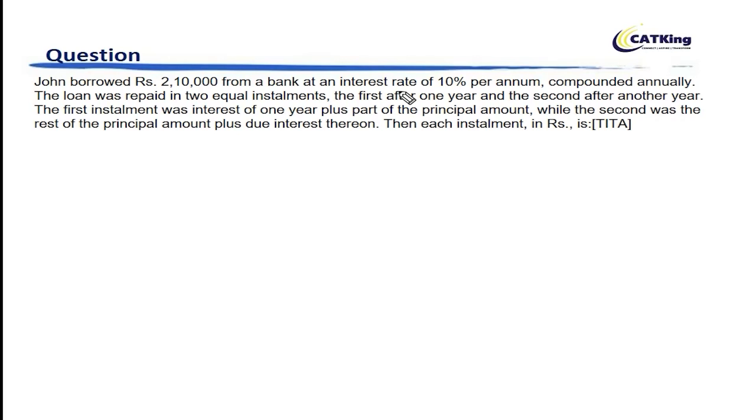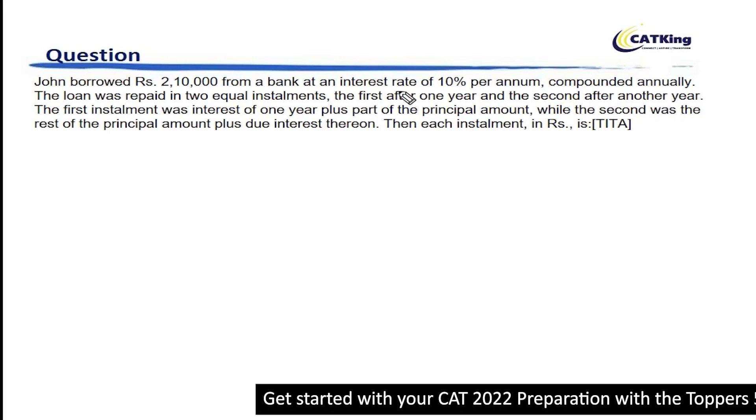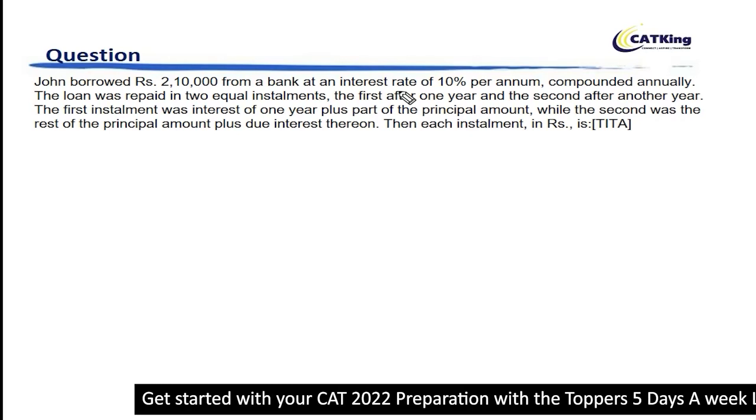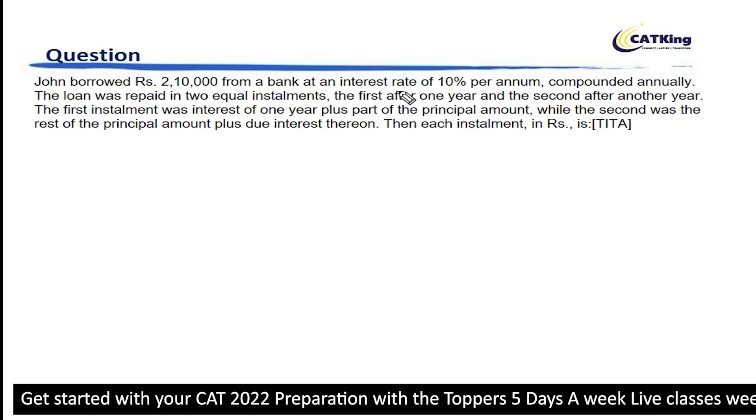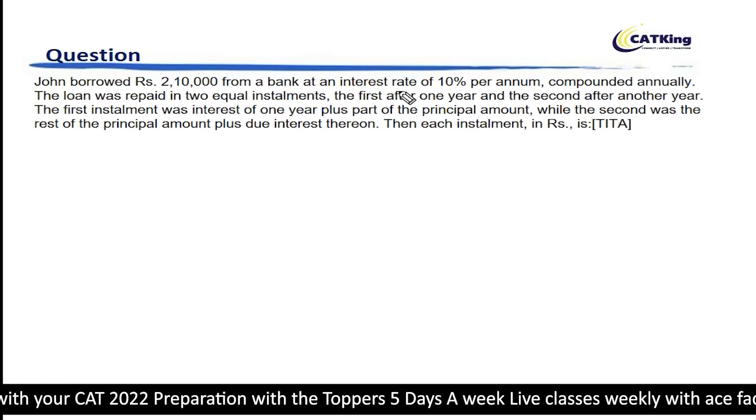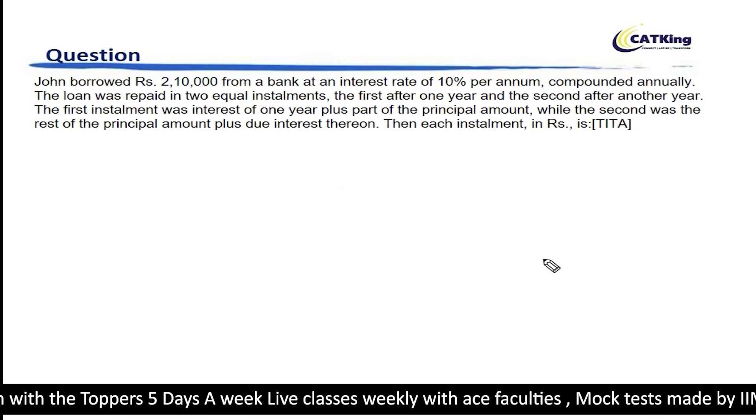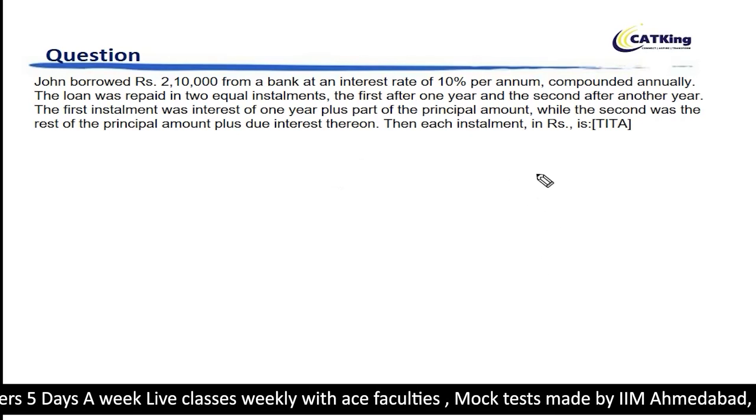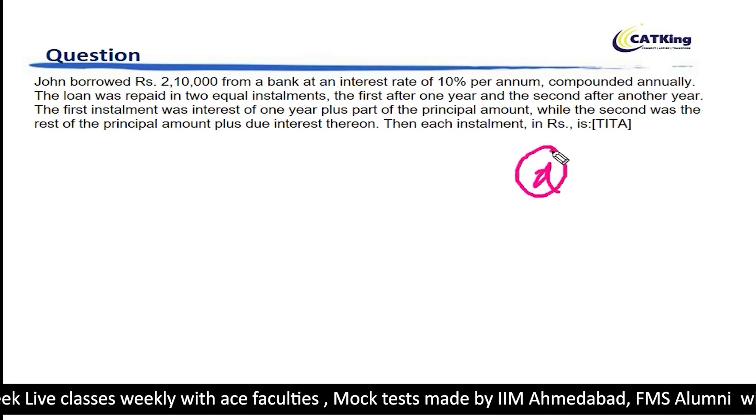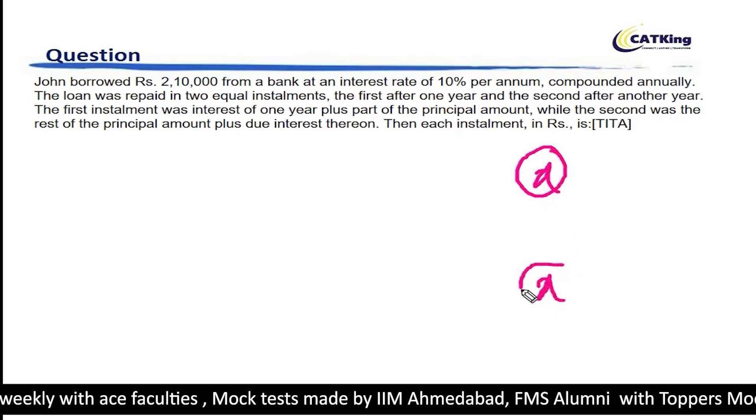The loan was repaid in two equal installments. The first one after one year and second after another year. The first installment was the interest of one year plus part of the principal while the second was the rest of the principal plus due interest thereon. We have to understand that the installments will be equal in size. So if the first installment is X rupees, the second installment is also X rupees.